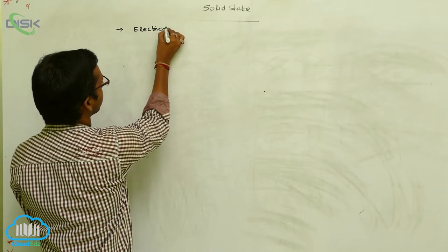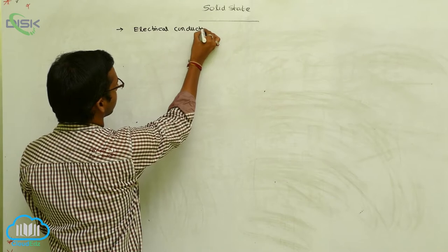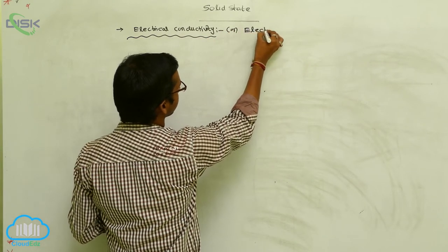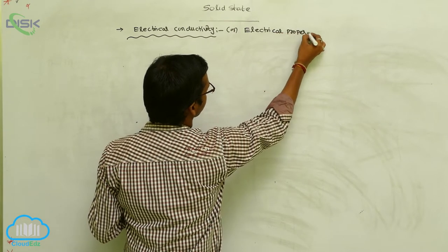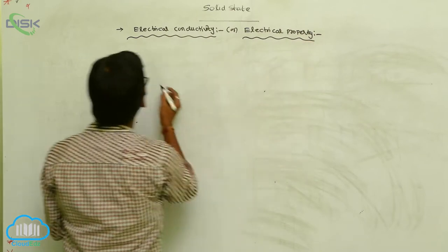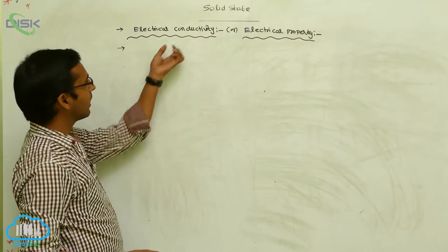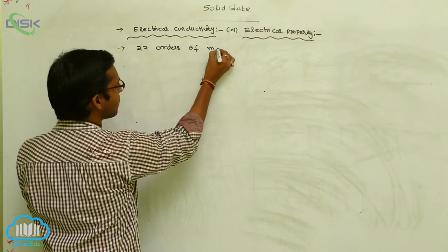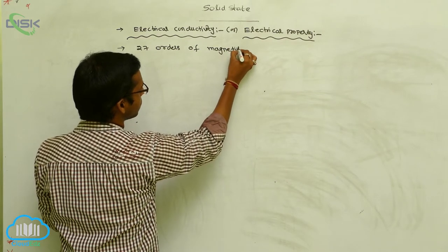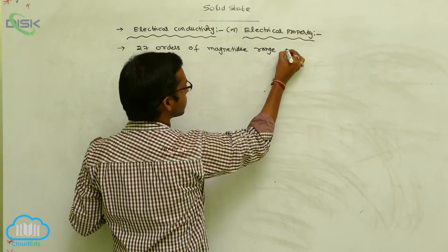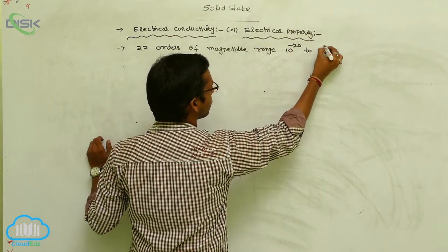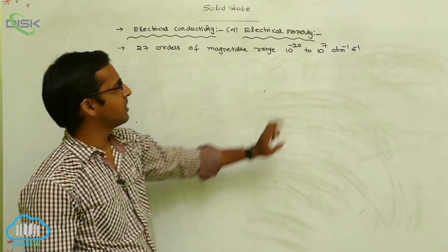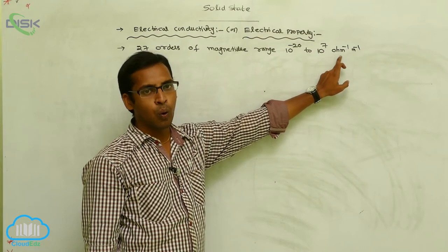Electrical conductivity, or electrical property. Generally, solid state substances exhibit high conductivity ranging over 27 orders of magnitude, from 10⁻²⁰ to 10⁷ Ohm⁻¹ meter⁻¹. This is the range of the conductivity property of solid state substances.